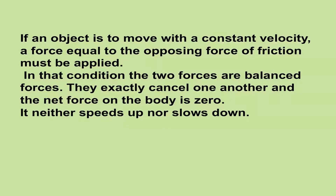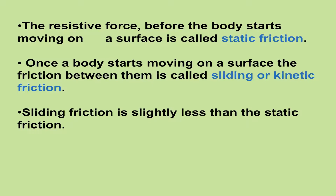If an object is to move with a constant velocity, a force equal to the opposing force of friction must be applied. In that condition the two forces are balanced forces — they exactly cancel one another and the net force on the body is zero. Hence, the acceleration produced in the body is zero and the body maintains its velocity; it neither speeds up nor slows down. The resistive force before the body starts moving on a surface is called static friction. Once a body starts moving on a flat surface, the friction between them is called sliding or kinetic friction. The sliding friction is slightly less than the static friction.